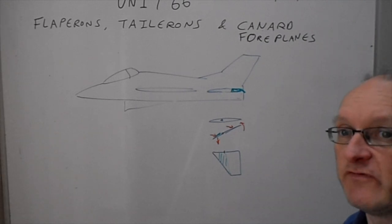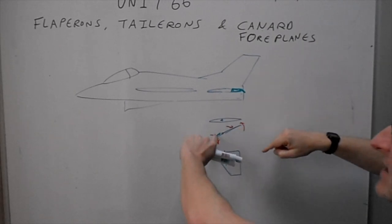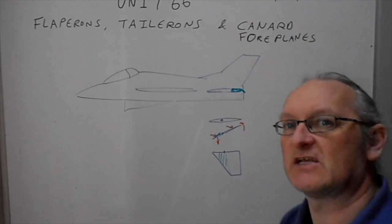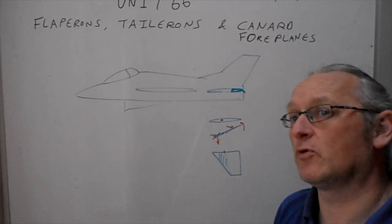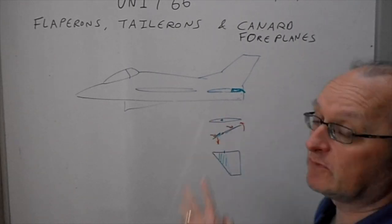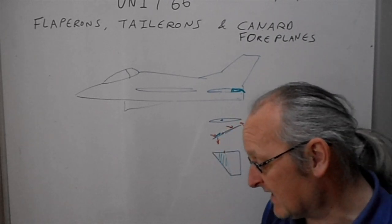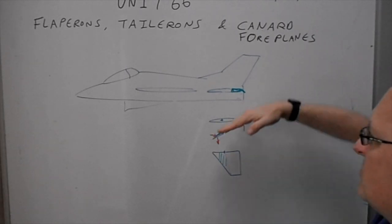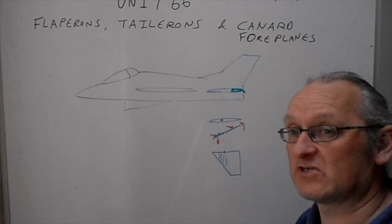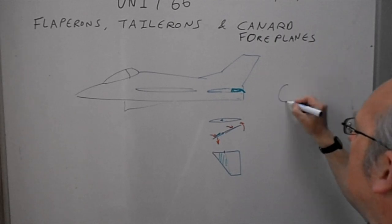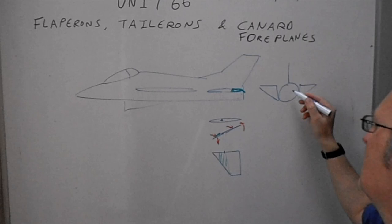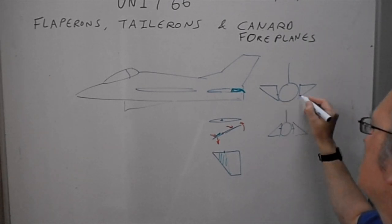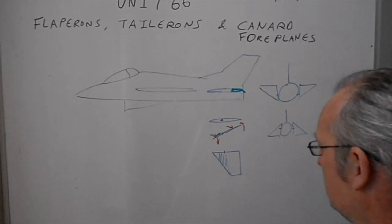A disadvantage of the taileron is it becomes very sensitive — when you move a little bit the air catches the bottom and flicks it up. So you need a sense-of-control system. I'm not going to cover anti-servo tabs in this lesson. The two main advantages of tailerons are: first, the surface area; and second, the two-for-one principle. An all-flying tail or stabilator just moves up or down — it's either up or it's moving down to control pitch.